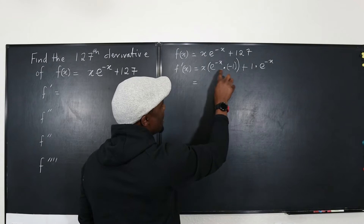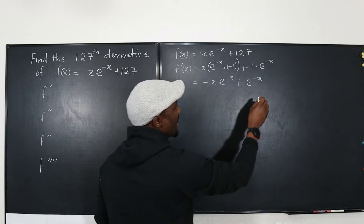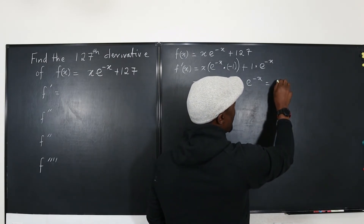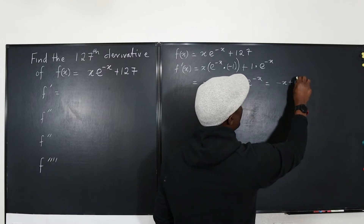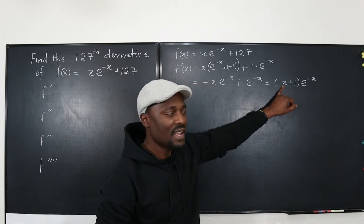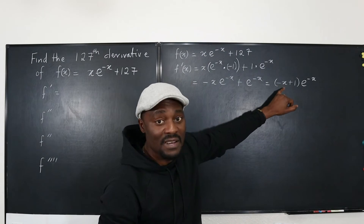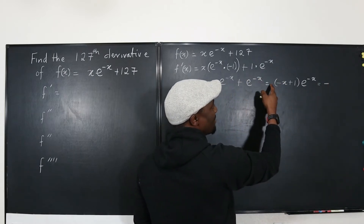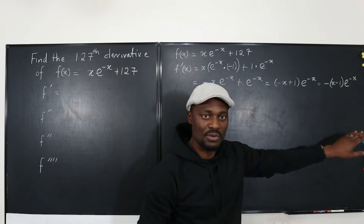Let's clean this up. We get negative x·e^(−x) plus e^(−x). Factoring out e^(−x) gives (−x + 1)e^(−x). I'd prefer the leading polynomial power not to have a negative coefficient, so pulling out a negative gives us −(x − 1)·e^(−x).